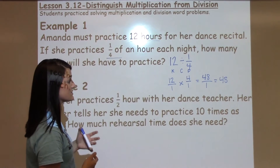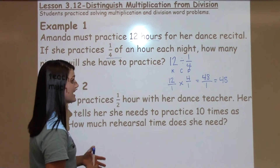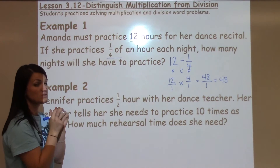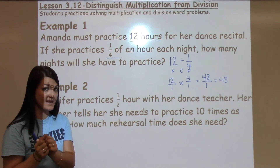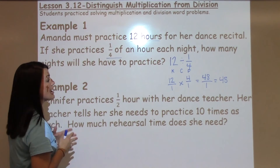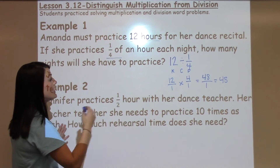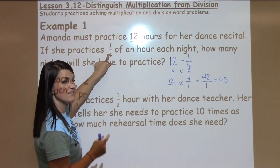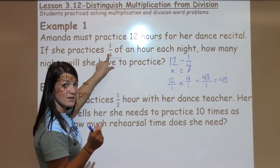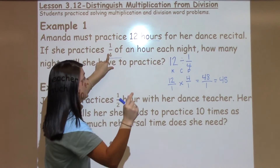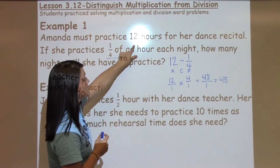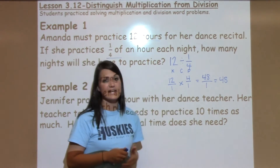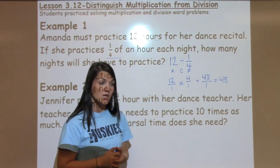So Amanda would have to practice 48 nights if she only practiced one-fourth of an hour. It would take her a long time, but it makes sense because a fourth of an hour is not very much, and if I have 12 hours total, all those fourths would take 48 nights to get there.